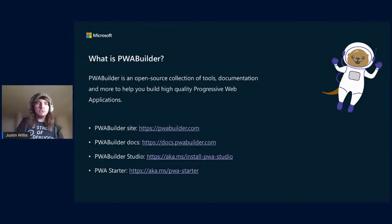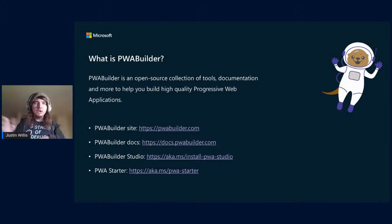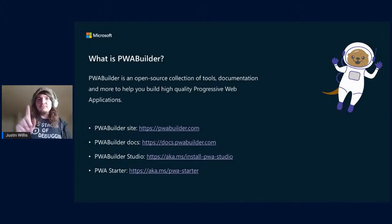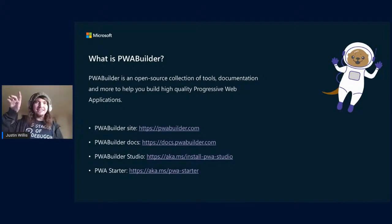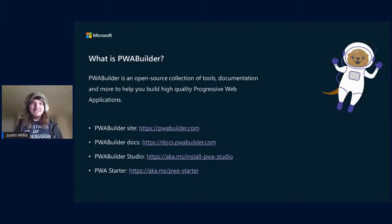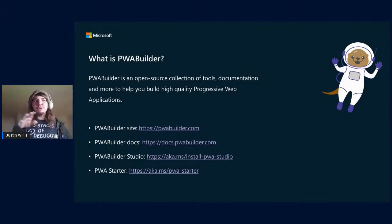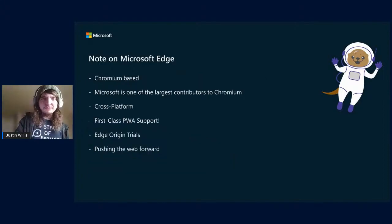The links on the slides are all our different tools. The first one, pwabuilder.com, is probably the best one to go to — our home page will route you to where you need to go based on what stage you are in the development process. Also on the right side of the screen, the otter in the space costume is actually our mascot as of recently. Why is it a space otter? I'm not totally sure — it's cool, and otters because we're based in the Pacific Northwest.